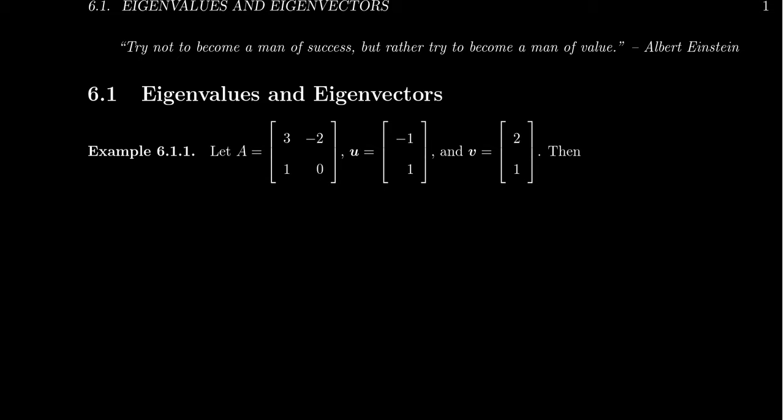So to motivate and explain what an eigenvalue is in the first place, consider the following seemingly normal vectors and matrix. We have a 2x2 matrix A, which is 3, negative 2, 1, 0, and two vectors U and V: negative 1, 1 for U and 2, 1 for V.